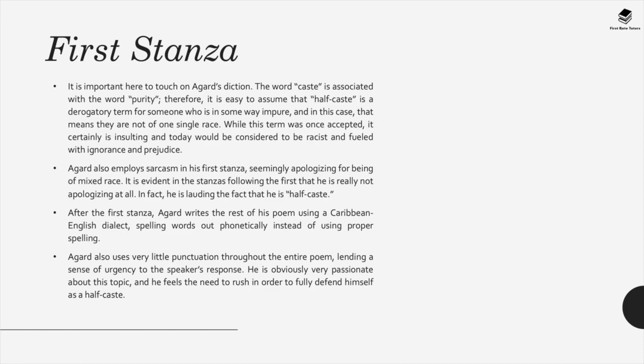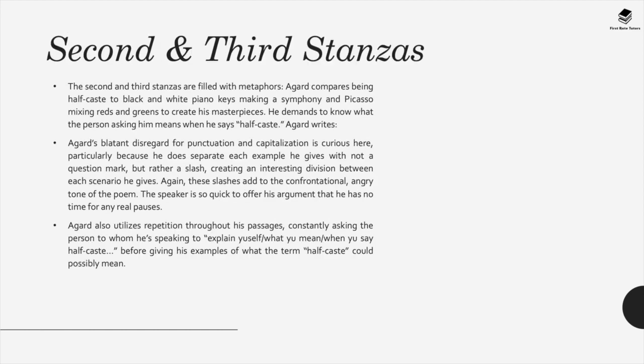Agard uses very little punctuation, with a lot of enjambement throughout the poem, lending urgency to the speaker's response. He seems passionate about this topic and rushes to fully defend himself against being labelled half-caste. In the second and third stanzas, he uses several metaphors — comparing being half-caste to the black and white piano keys that make a symphony, and to Picasso mixing reds and greens to create masterpieces. He demands to know what the person really means, pointing out that purity is actually impossible in any sphere of life.